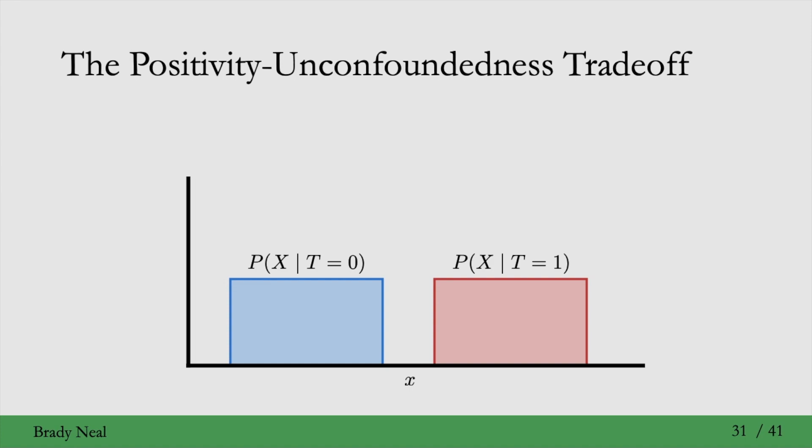We just saw unconfoundedness and positivity as two very important assumptions for identifiability. However, they are a trade-off in some sense. For unconfoundedness, the general idea—which is not always true, but the general idea—is that the more covariates you condition on, the more likely you are to have satisfied unconfoundedness. However, the more covariates you condition on, the worse positivity gets.